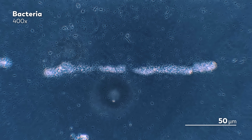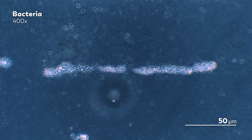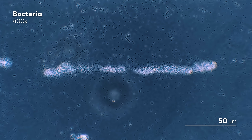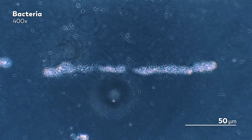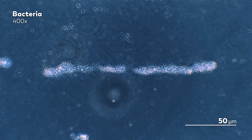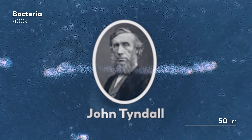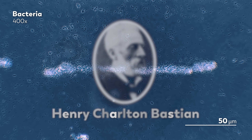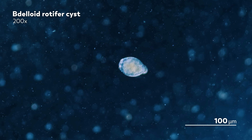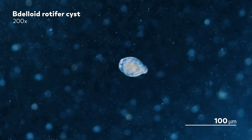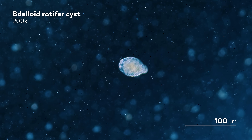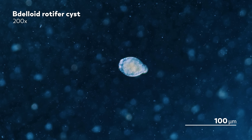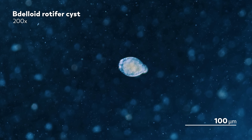Pasteur gets much of the credit for disproving spontaneous generation, maybe in part because it fed into his understanding of fermentation and the germ theory of disease. And when we lay out the story like this, the path to his discovery seems kind of linear — one experiment begets another, which begets another, and so on. Flask after flask, made murky with microbes, like the bottle James set up in his backyard. But there are so many figures missing from our telling of this story, like John Tyndall, the Irish physicist who investigated and validated Pasteur's theory, or Pasteur's opposition, like the pathologist Henry Charlton Bastion. Because ultimately, the uncovering of knowledge is a very human affair — a search for beginnings buried in a hidden world. A treasure hunt, with many treasures, but no end in sight.